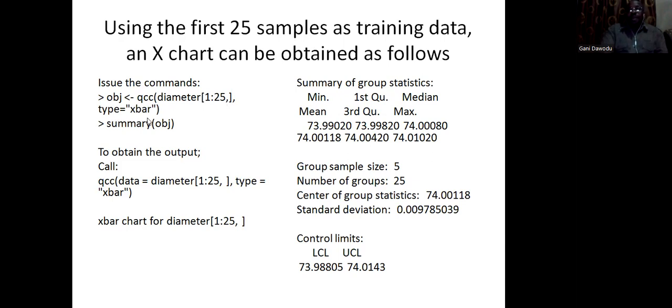Then I'm going to take the first 25 data in there, construct X-bar chart. Once you give this command, it executes it. You can ask for the summary of what it has done. Here, you have a summary of the parameters. It concludes by giving you the lower control limit and the upper control limit.